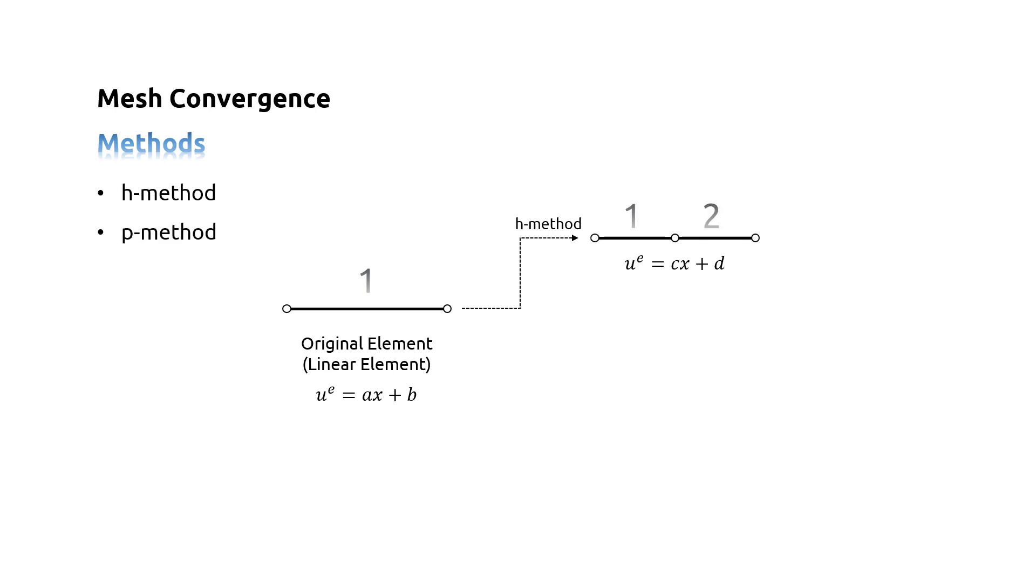The second method is called P-method. This method increases the polynomial order of the interpolation function while keeping the number of elements constant. Now we are going to have a mesh convergence study to see these theories in real simulation.